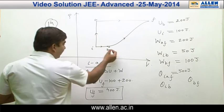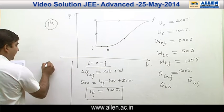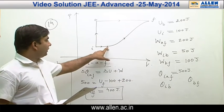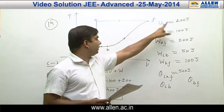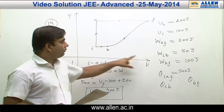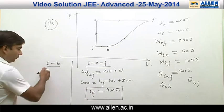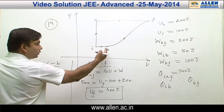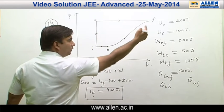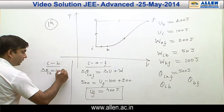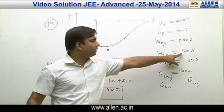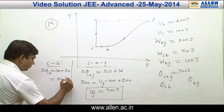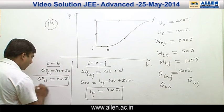Now applying the first law for path i to b: Q_ib = (U_b − U_i) + W_ib. U_b is 200, U_i is 100, so change in internal energy is 100. Work done in path i to b is 50 joules. Hence Q_ib comes out to be 150 joules.